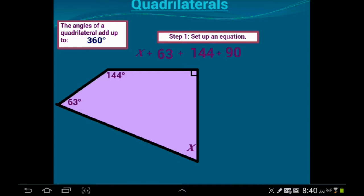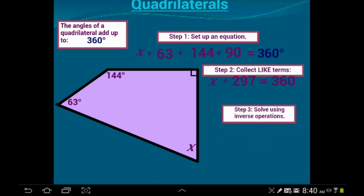not 180. 180 is for a triangle, so it equals 360. Second step is just to kind of put together your constants, and those are called your like terms. So then you get x plus 297 equals 360, and then just use inverse operations to solve it. And you get x equals 63 degrees.